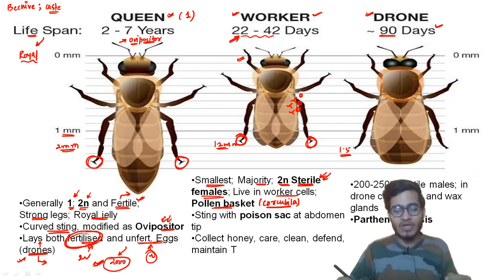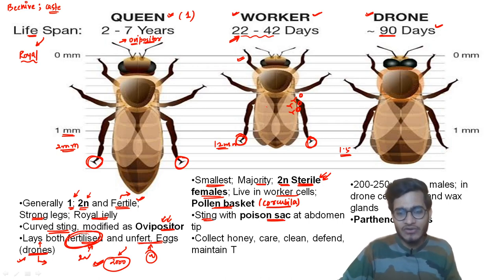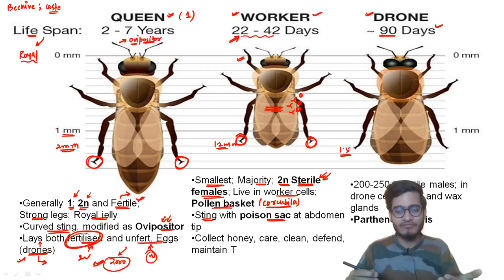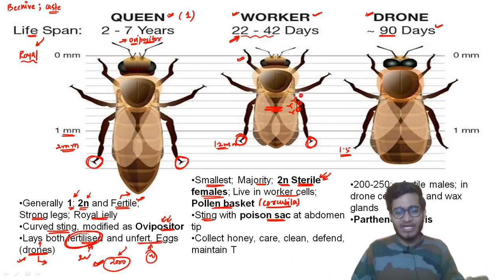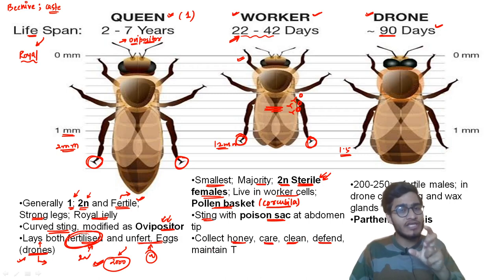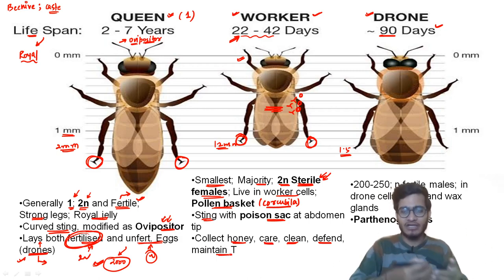The pollen transfer is associated with the worker. Workers live in worker cells and have a pollen basket. At the tip of their abdomen, a poison sac is present at the sting. When they sting, different chemicals are injected into the body. Workers collect honey, care for young ones produced by fertilization or parthenogenesis, clean the beehive, and defend it using their poison sac.